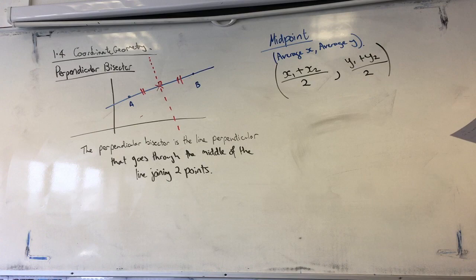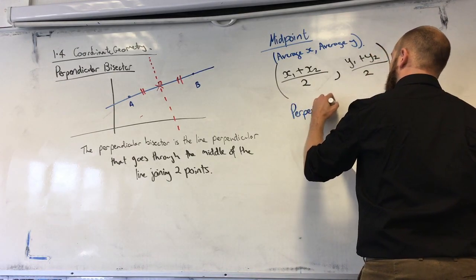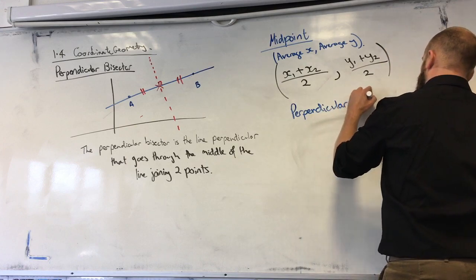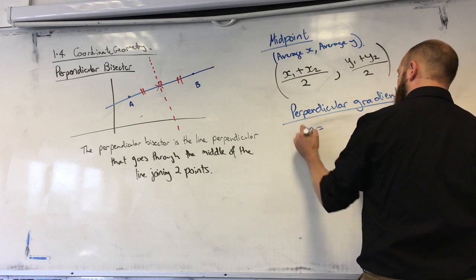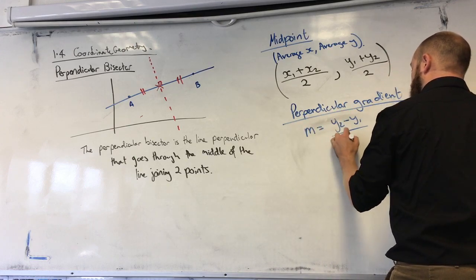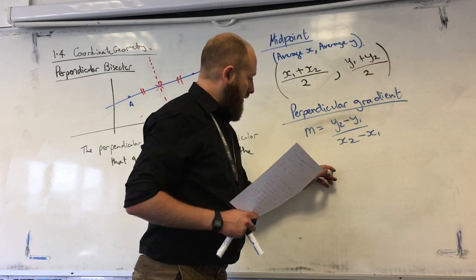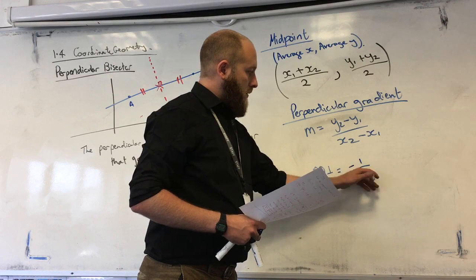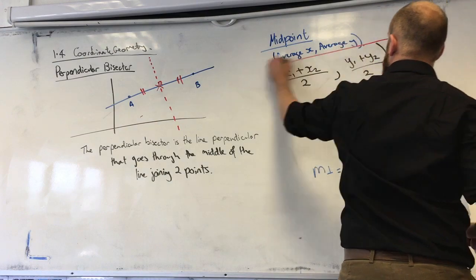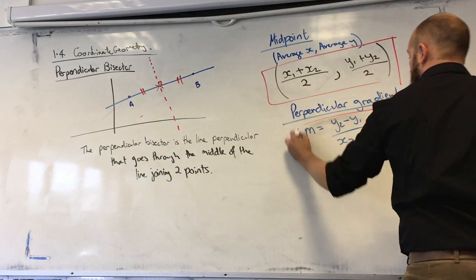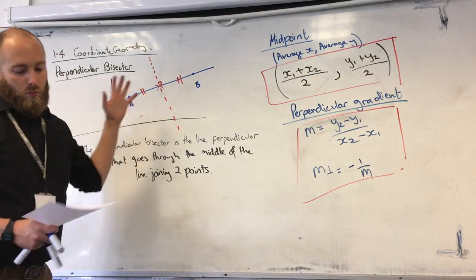The other thing we need as a tool is the perpendicular gradient. So remembering gradient is y2 take y1 over x2 take x1. So the perpendicular gradient is the negative reciprocal of the original gradient. So with all these things together, we can calculate what a perpendicular bisector is for any two points.